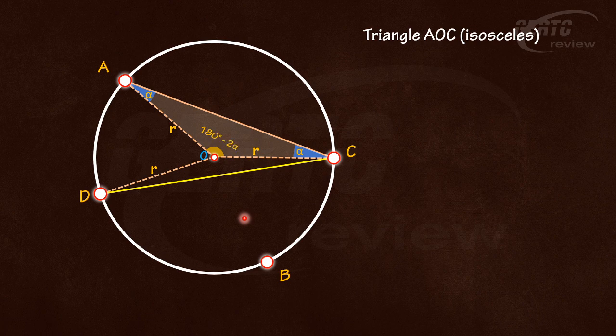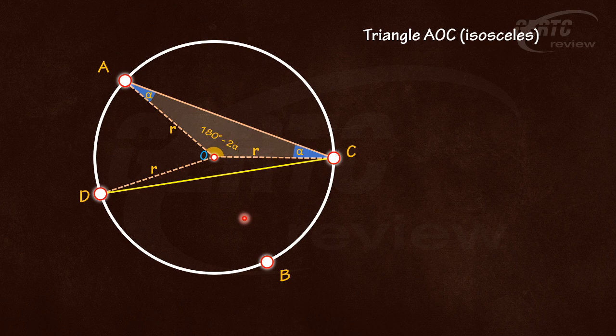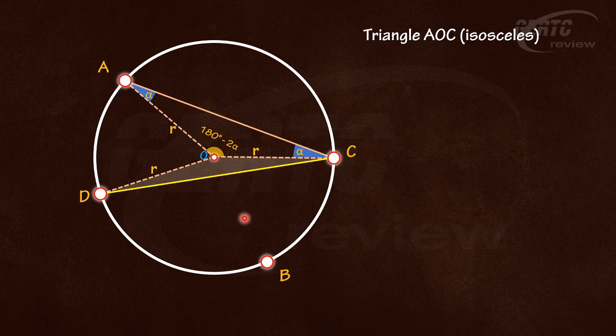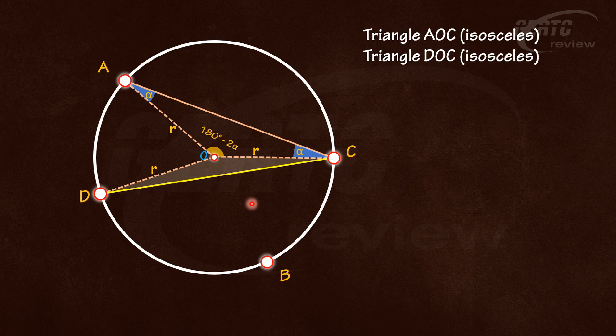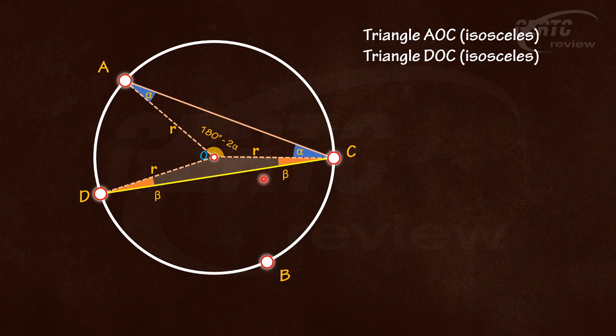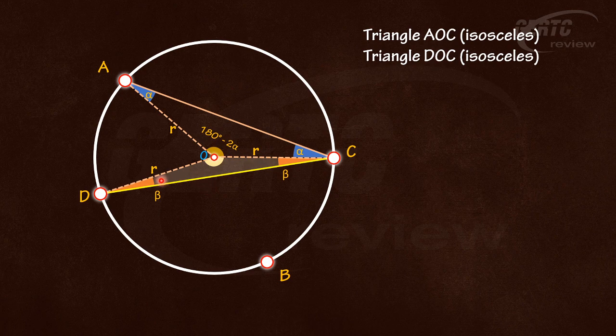Now let's consider the other triangle, triangle DOC. Just like triangle AOC, this is also an isosceles triangle with two equal sides. The angles opposite the equal sides are also equal. Let's call these angles beta. And we can solve this angle at the center, which equals 180 degrees minus two times beta.